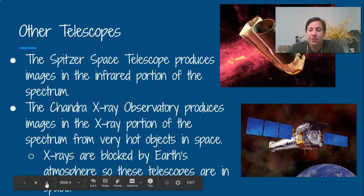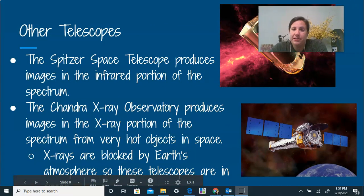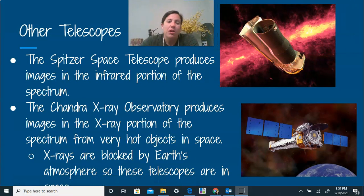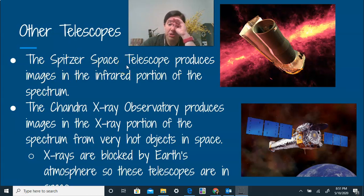Then we also have, let me move myself so I'm not covering the picture, but we have something called an X-ray observatory. So this one here is also infrared. So the Spitzer space telescope, that's going to produce images in the infrared portion of the spectrum.